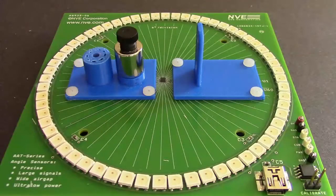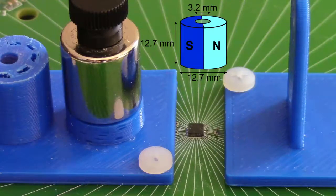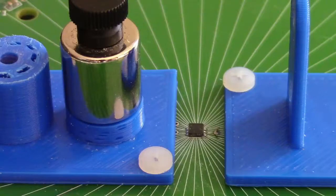Just like standard end of shaft or on-axis angle sensing, we use a split pole ring or disc magnet. Here we are using a 12.7 by 12.7 millimeter neodymium rare earth ring magnet, which is strong enough for large air gaps.